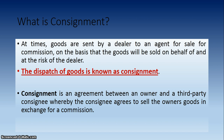مطلب، owner جو ہوتا ہے وہ کسی third party کو اپنا goods دیتا ہے — تاکہ وہ third party market میں goods کو sale کرے۔ اور third party کو جو owner ہے وہ commission دے گا۔ ایسے agreement کو Consignment Agreement یا Consignment کہتے ہیں۔